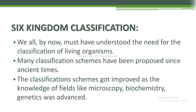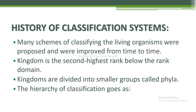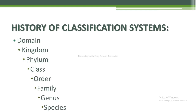Next I am going to discuss further about the six kingdom classification. We must all by now understand the need for classification of living organisms. Many classification schemes have been proposed since ancient times, and they got improved as knowledge of microscopy, biochemistry, and genetics advanced. Kingdom is the second highest rank below the rank domain. Kingdoms are divided into smaller groups called phyla. The hierarchy of classification goes: domain, kingdom, phylum, class, order, family, genus, and species.